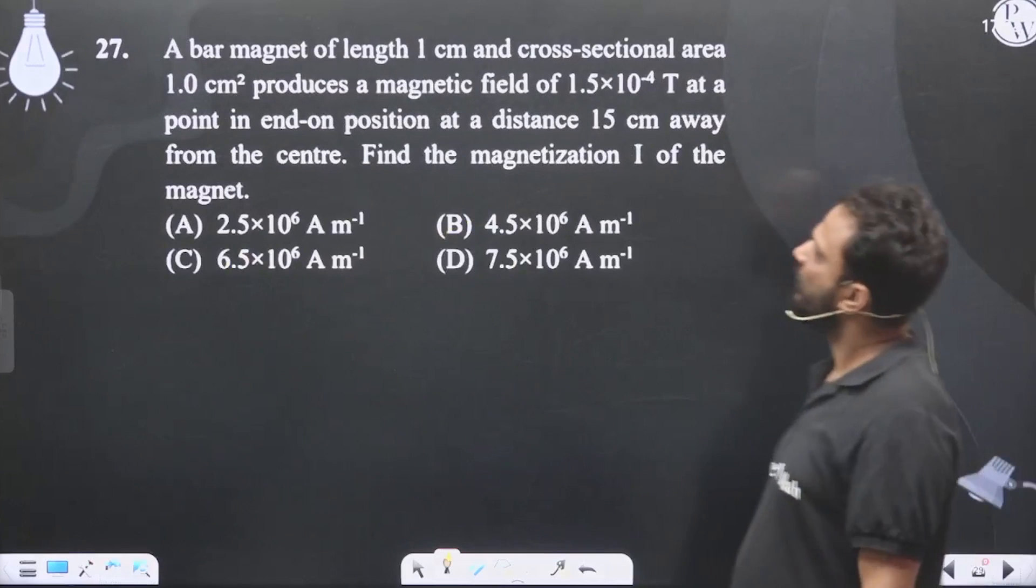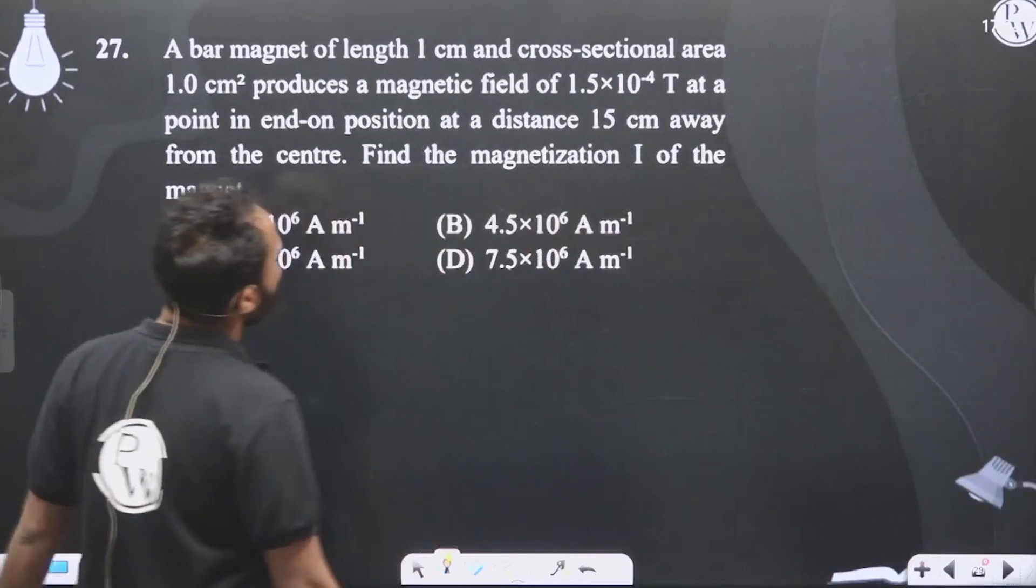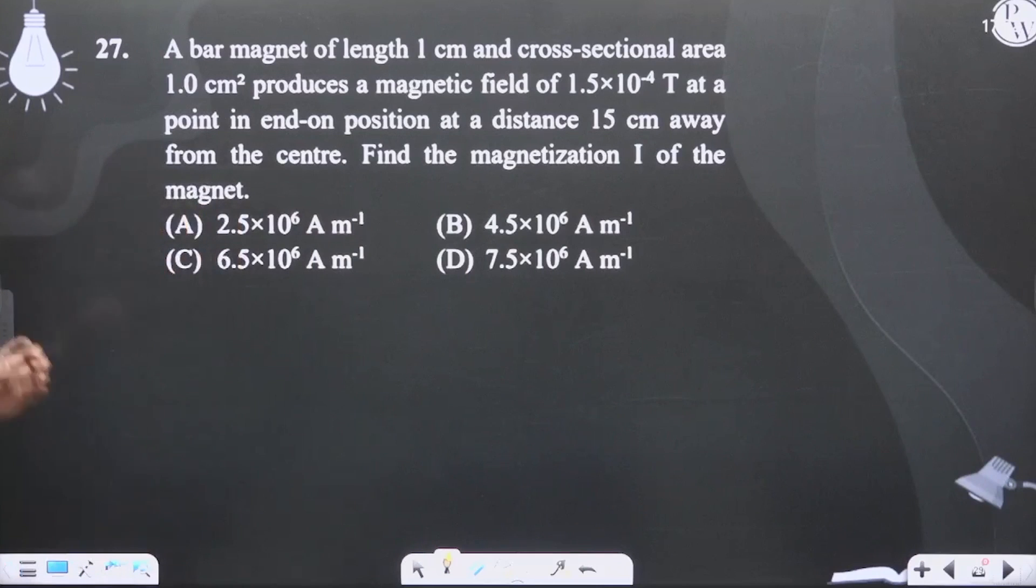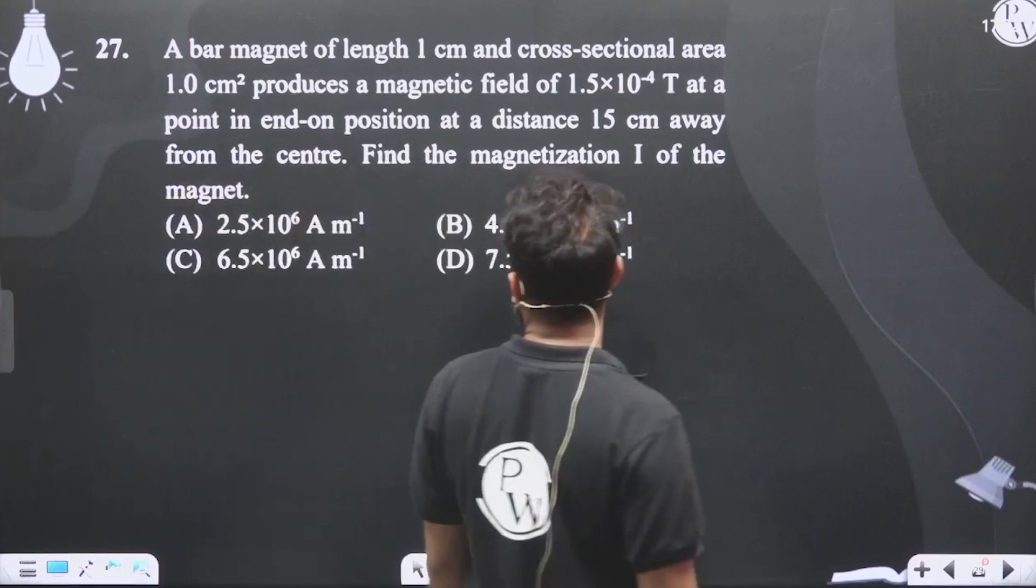Okay, let's see this question. A bar magnet of length 1 cm, cross-section area 1 cm square, produces a magnetic field of 1.5×10⁻⁴ T at a point in end-on position at a distance 15 cm from the center. Find the magnetization of the magnet.